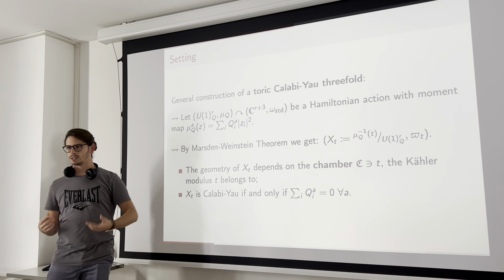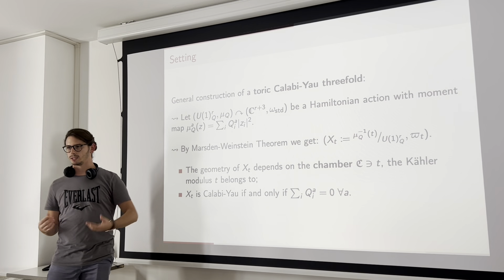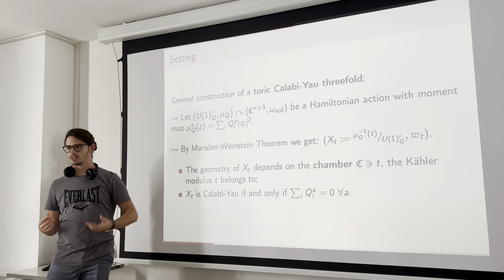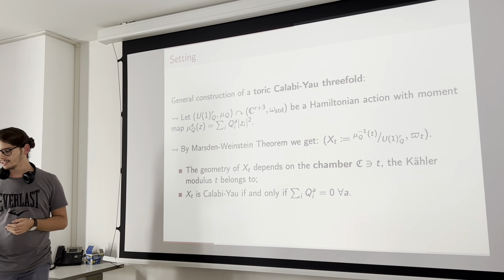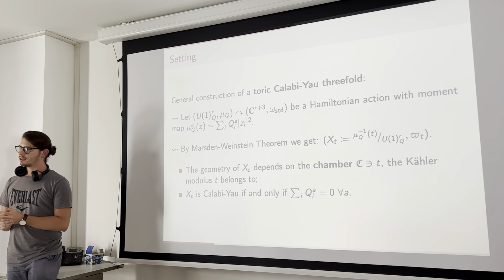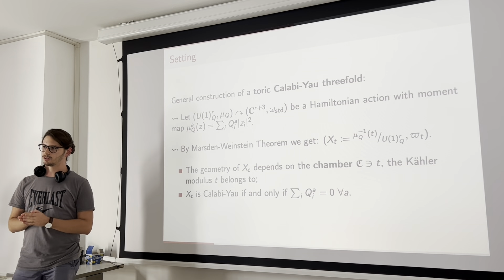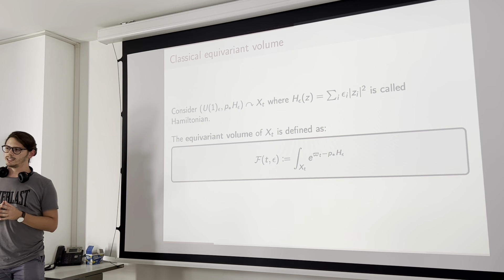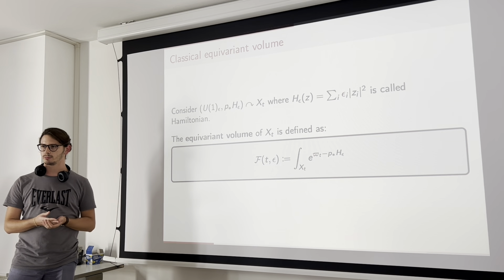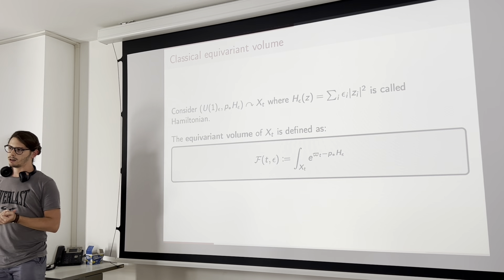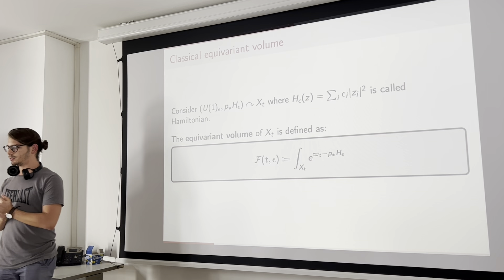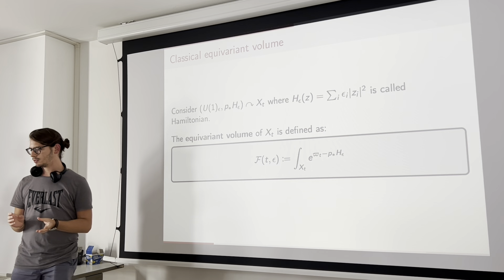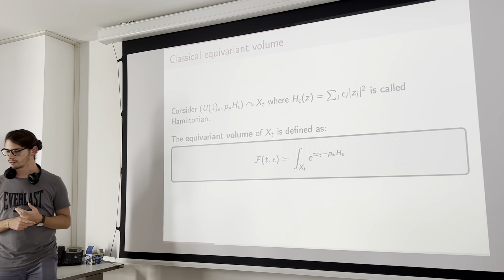We are interested in Calabi-Yau manifolds, so we enforce the Calabi-Yau condition, which is equivalent to asking that the columns of the charge matrix sum to zero. Among other consequences, this means our Calabi-Yau will always be non-compact. We therefore need to talk about equivariant volumes to regularize the infinite symplectic volume the manifold will always have. Since our manifold is toric, we always have a toric action of dimension equal to the complex dimension — in this case, three.